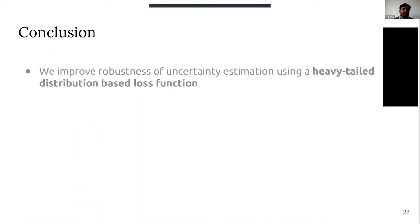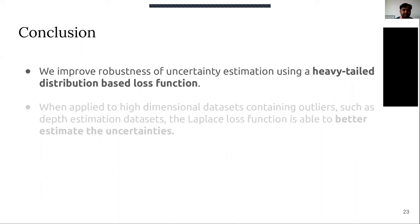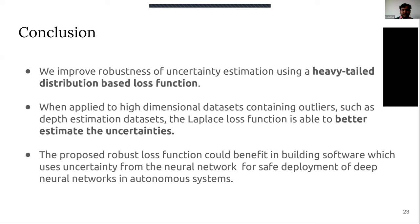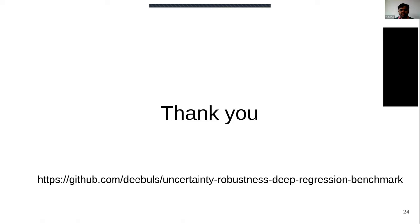To conclude: we proved that many uncertainty estimation methods are not robust to outliers. To improve robustness, we use a heavy tail-based distribution loss function. We were able to get better estimates of uncertainties even in the presence of outliers, and we hope this proposed loss function will benefit building safe software where uncertainty is used as a metric. The code for the PyTorch implementation is available online. Thank you everyone.